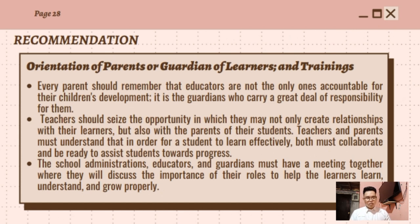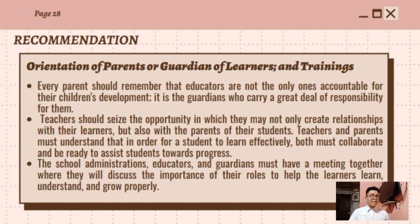For the last point, school administrations, educators, and guardians must have a meeting together where they will discuss the importance of their roles to help learners learn, understand, and grow properly. That is the main point of this orientation of parents, guardians, learners, and trainings. This is a very important way that teachers, parents, and administrators must collaborate with each other to assess and evaluate the student's progress in learning — to give them the benefits for their learning.